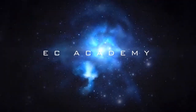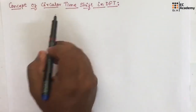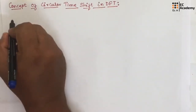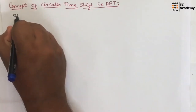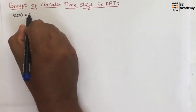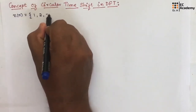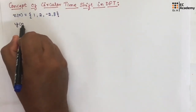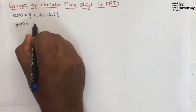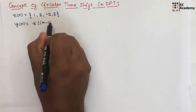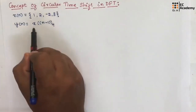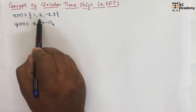Hello friends, welcome to EC Academy. In this lecture, let us understand the concept of circular time shift in DSP. To understand this, let us take an example: x of n can be given as {1, 2, -2, 3}. We need to find a new sequence y of n given as x of (n minus 1) mod 4, which will be the circular shift of the given sequence x of n.